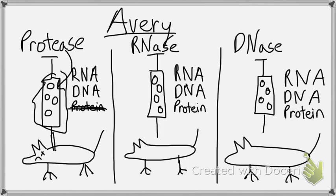Next up, he adds RNase to the syringe. RNase kills all the RNA in the syringe. He injects the mouse, and the mouse still dies. So he knows definitively, RNA cannot be the genetic material.